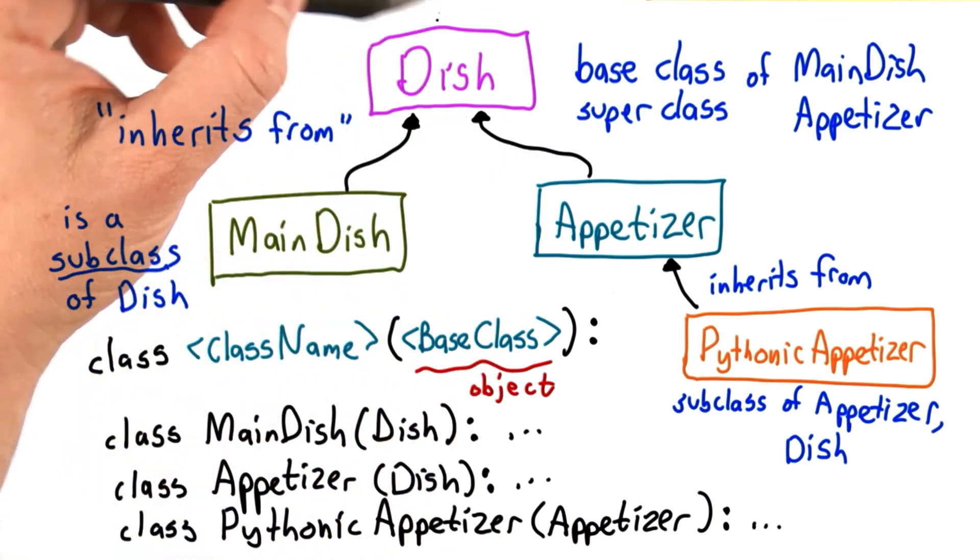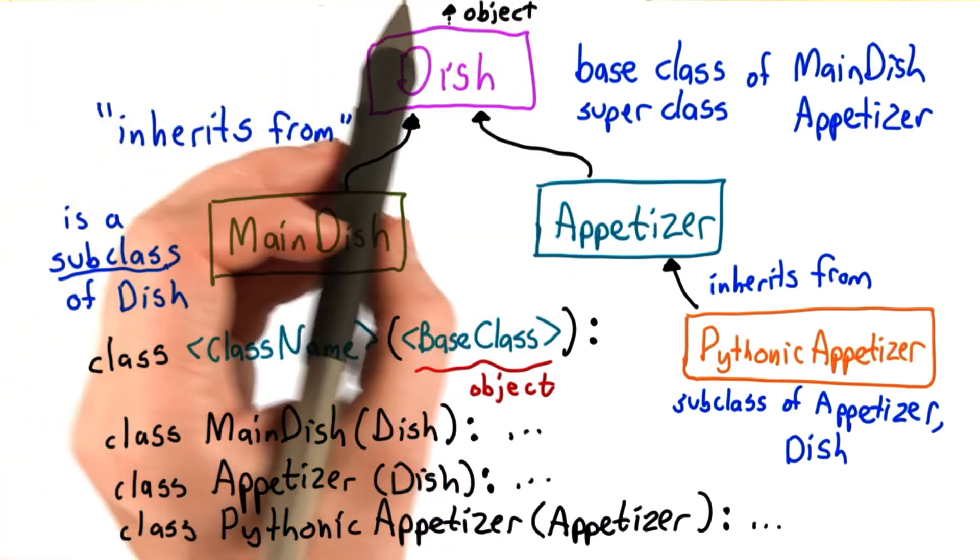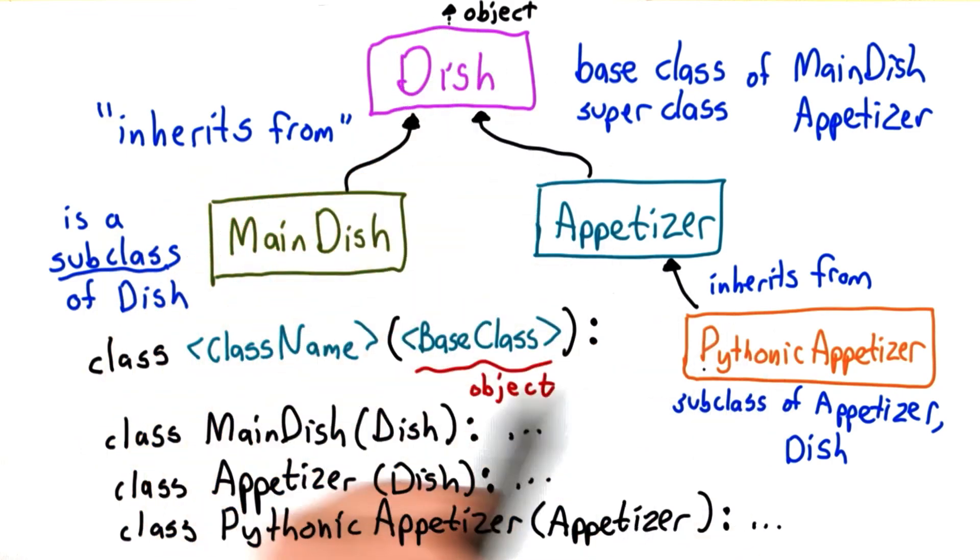What about the dish? Well, we didn't draw any base class for that. And its base class is the object. That's the ultimate superclass of all classes we create in Python.